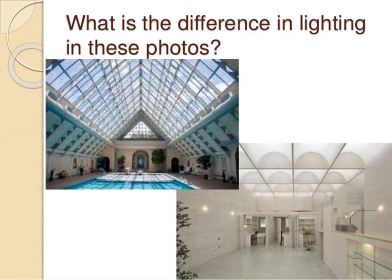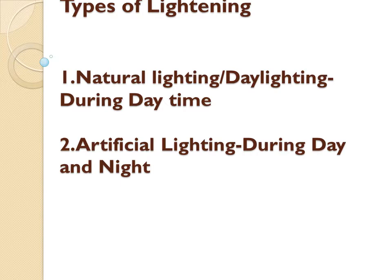We will start with the next building service, that is lighting in a building. Lighting is one of the very basic and essential components that must be provided in a building for the occupants. This picture clearly shows two different views from the lighting point of view — both spaces are well lighted, but one takes maximum advantage of daylight and the other uses an artificial lighting system.